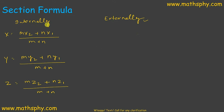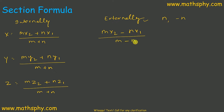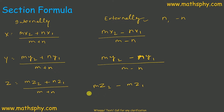In case of internal division, the ratio was M to N. In case of external division, N would be replaced by negative N. So the formula becomes: X = (M·X₂ − N·X₁) / (M − N), and Y = (M·Y₂ − N·Y₁) / (M − N). This is the internal division formula, and this is the external division formula. Let's quickly solve a question to get a better understanding.